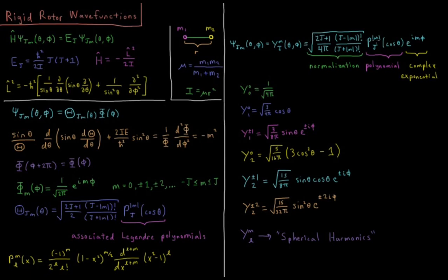So normalization square root of 2j plus 1 over 4 pi times j minus absolute value of m factorial over j plus absolute value of m factorial square root of everything. The Legendre polynomials of cosine theta of values j absolute value of m times e to the i m phi.